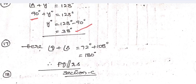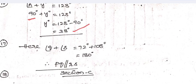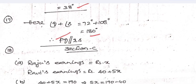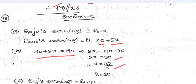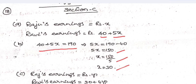For the parallel lines question: angles Q and S total 180 degrees, so lines PQ and RS are parallel. For the Ravi/Raj earnings problem: let Raj's earnings be x rupees. Ravi's earnings are five times Raj's plus 40, so 5x plus 40 equals 190. Solving: x equals 30 rupees.